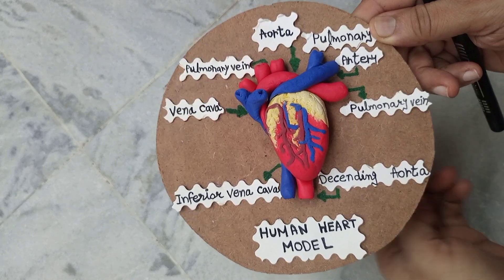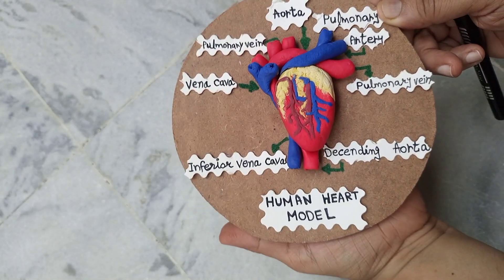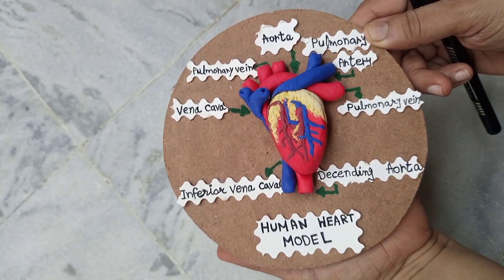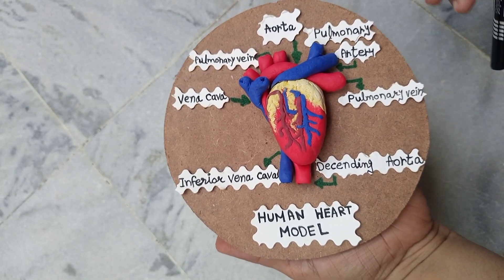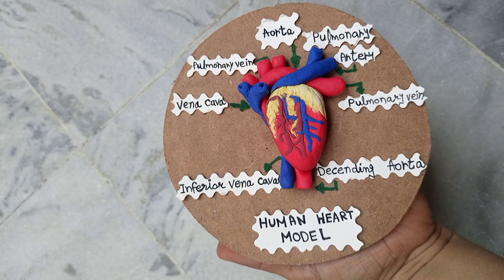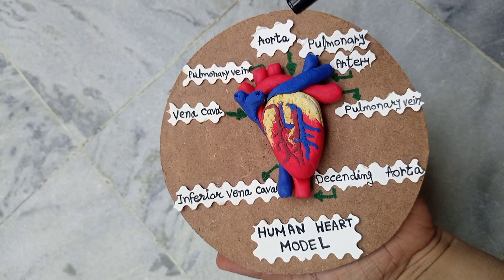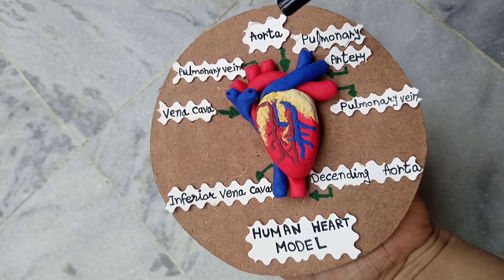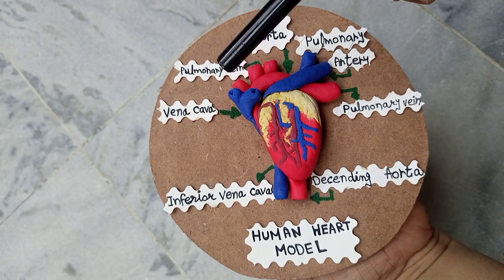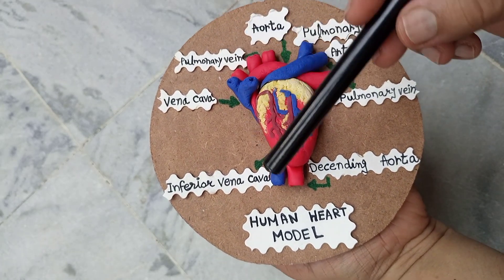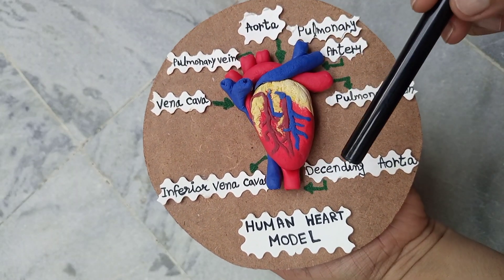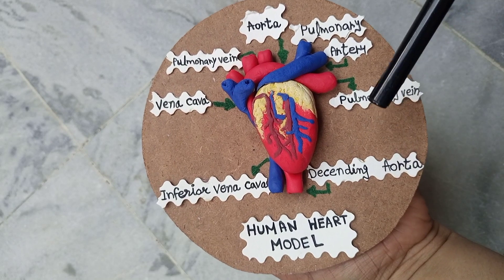Hello everybody, today we are going to learn about the heart model and the main types of blood vessels. So there are three main big types of vessels.